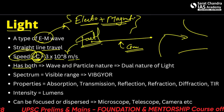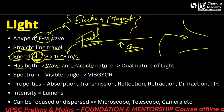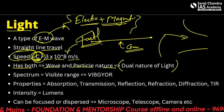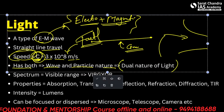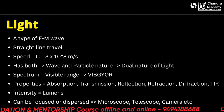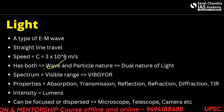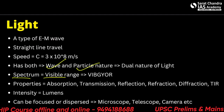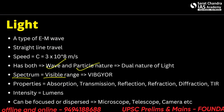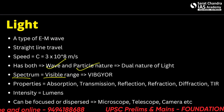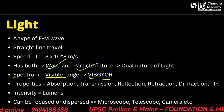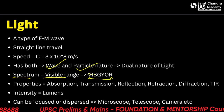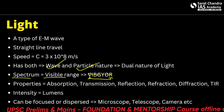Light has both wave and particle nature — this is known as the dual nature of light. Its spectrum lies in the visible range known as VIBGYOR, meaning it displays seven colors upon complete diffraction: violet, indigo, blue, green, yellow, orange, and red.